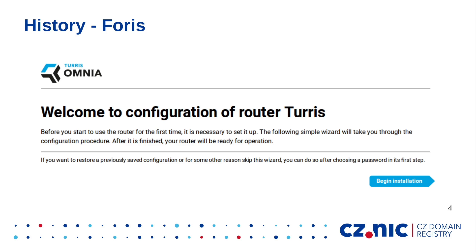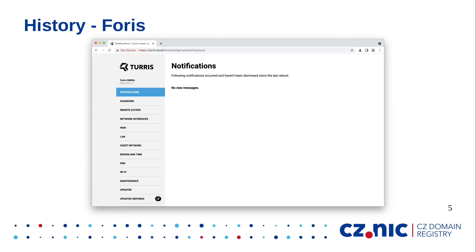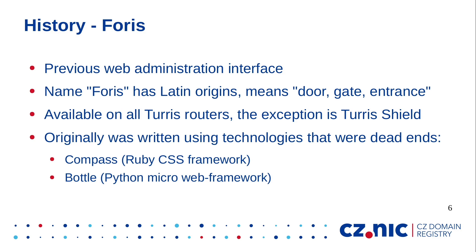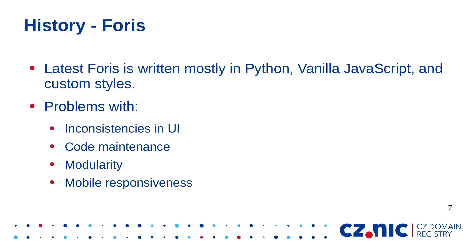With time and more written code, it transformed into the Foris administration interface. Historically it was a wizard that had the main purpose to onboard users and accompany them to LUCI. The name Foris has Latin origins and means door, gate, entrance. It was originally written using technologies that have almost ceased to exist — Compass, a Ruby CSS framework, and Bottle, a Python web framework. The latest Foris is written mostly in Python, JavaScript and custom style sheets, which led to inconsistencies in UI, problems with code maintenance, modularity and mobile responsiveness.